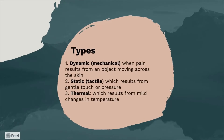There are three main types of allodynia: dynamic, static, and thermal. Dynamic is when pain results from an object moving across the skin. Static is when pain results from gentle touch or pressure. Thermal is when pain results from a mild change in temperature.